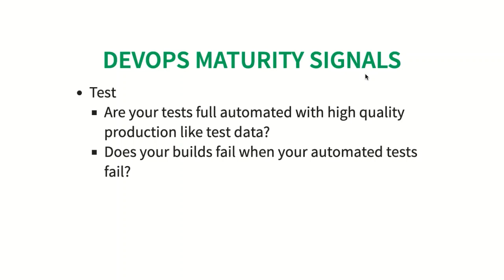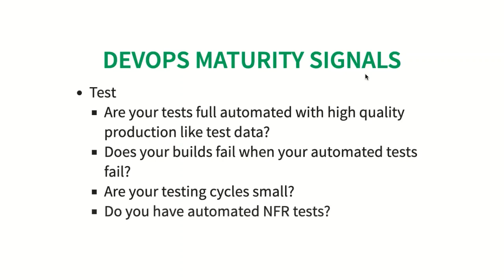If any of those tests fail, your builds should fail as well and the team should be immediately notified. The next important question is: are your testing cycles small? When testing cycles go into weeks and months, it means there is a lot of manual testing going on, and you should focus on trying to automate some of those tests.